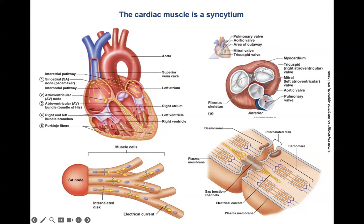One reason the atria are unable to pass the signal down to the ventricles is the presence of the so-called cardiac skeleton. The cardiac skeleton has a number of physiological roles, which will be discussed in a separate part. As far as the conduction system is concerned, the cardiac skeleton is an electrical insulator that prevents the signal from passing from the atria to the ventricles.